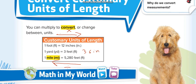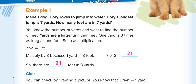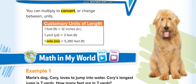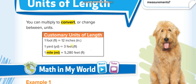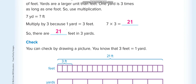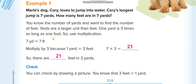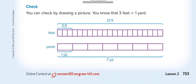First example: Marla's dog Cory loves to jump into water. Cory's longest jump is 7 yards — how many feet is that? Going back to the table, 1 yard equals 3 feet, and we are converting from larger to smaller, so we multiply: 7 times 3 equals 21 feet.